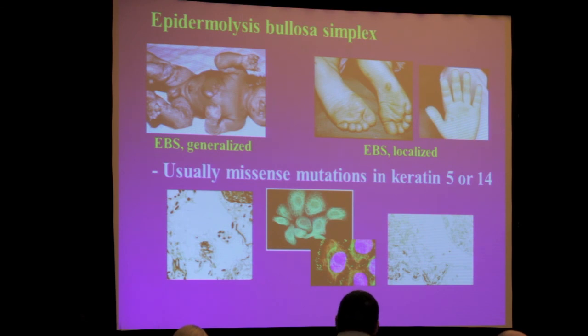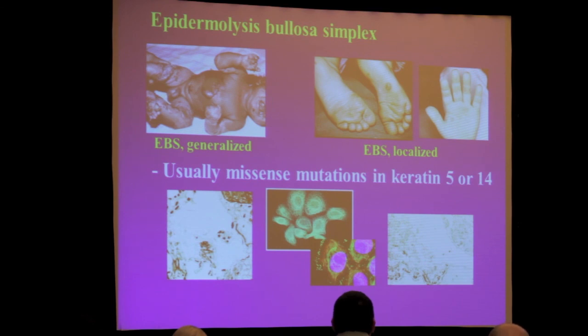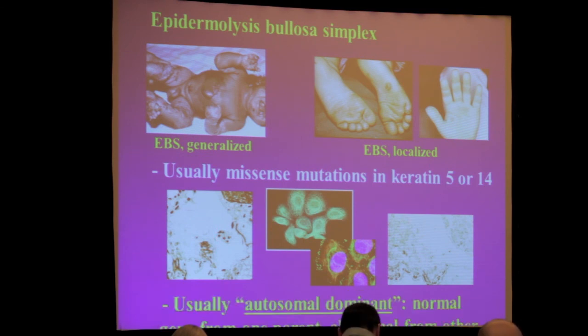EB simplex is usually due to missense mutations in one of two keratins that are partners — keratin 5 and keratin 14 — which live in the lowest layer of the cells of the epidermis, the outer layer of skin. Keratin forms a network from the nucleus to the outer area that helps support the cell. When there's an abnormality — just a missense mutation — you produce the protein but it's not normal, and that leads to collapse of these cells and blisters that occur right through the cell. This is usually an autosomal dominant trait.